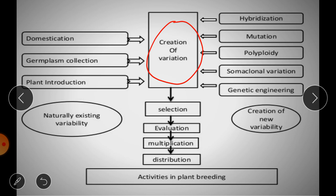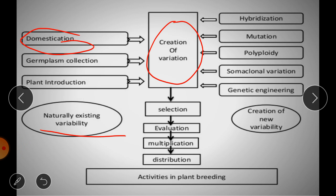We can create genetic variation by two ways. Sometimes in nature, such type of genetic variation is already present. Through domestication — if we domesticate wild species or wild relatives and start their cultivation — we will get variation. Through germplasm collection from different locations, we can capture already existing variation. Germplasm is the sum total of all genes present in a population. Through plant introduction — the transfer of genetic material from one location to another where it has never been grown before — we can use genetic variability already present in nature.